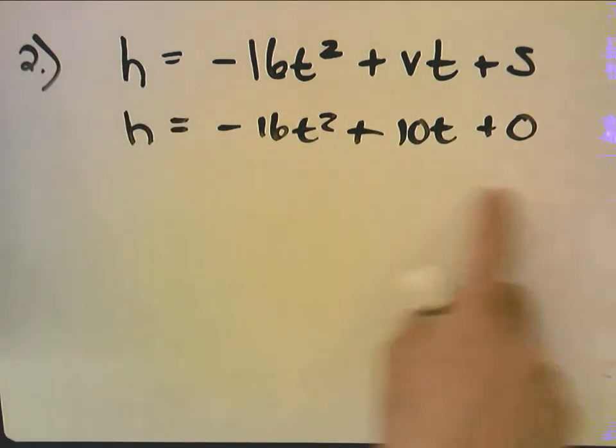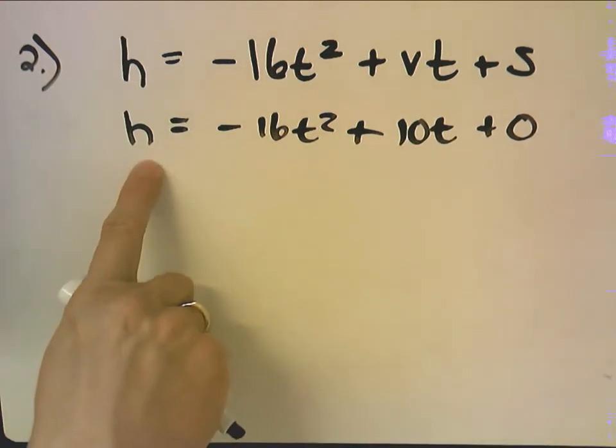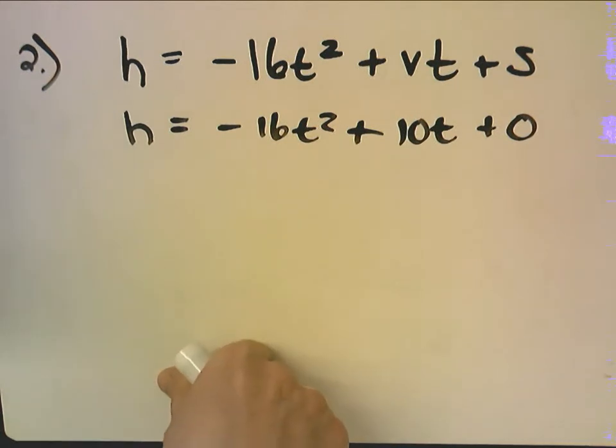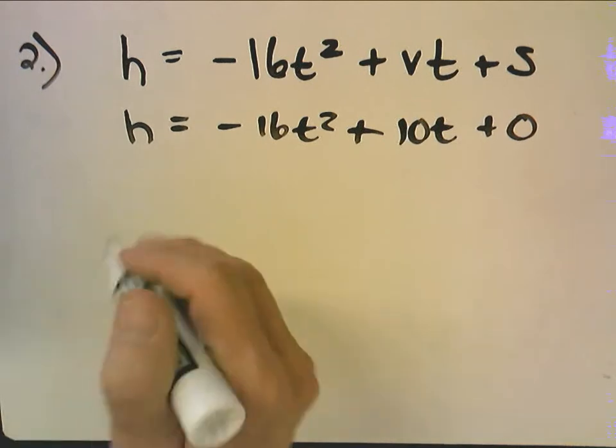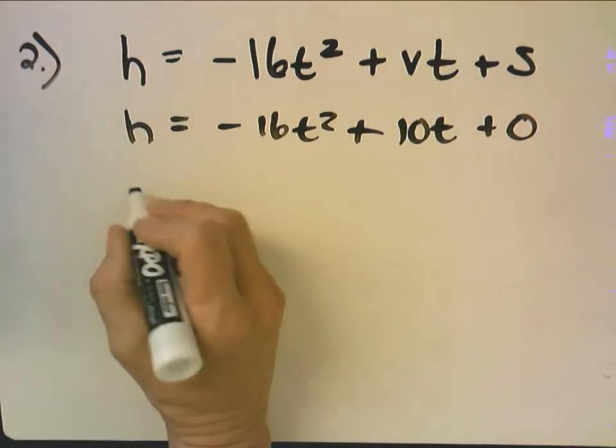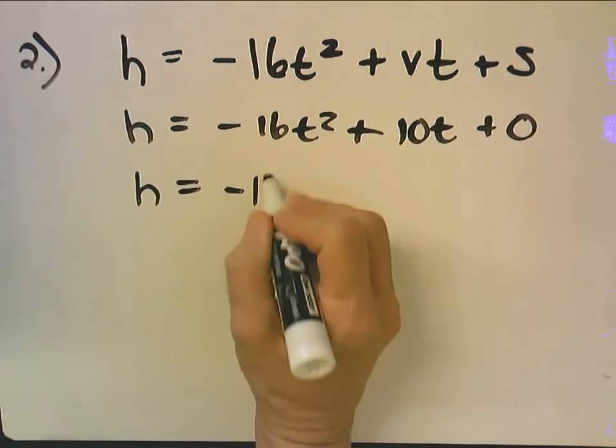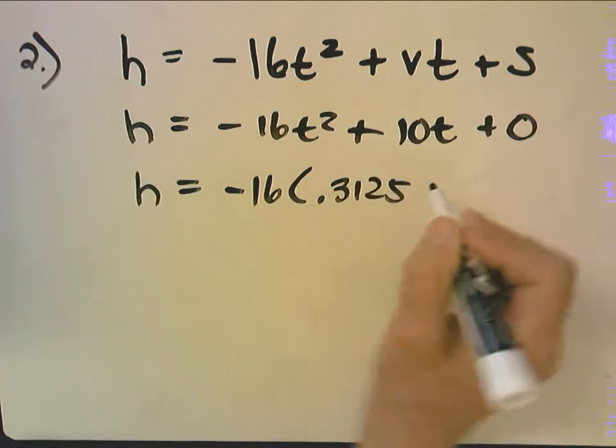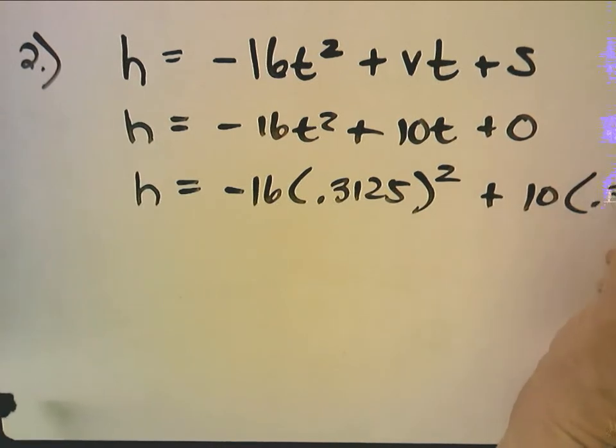So this would be a function that gives the height as a function of time. But then it says if the spittle bug reaches its maximum height at 0.3125 seconds, how high can it jump? So here I'm solving for h. So I'd make this negative 16 times 0.3125 squared plus 10 times 0.3125.